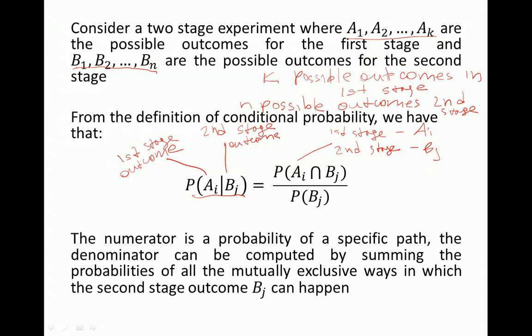The numerator is the probability of a specific path Ai then Bj, and the denominator is just the probability of Bj, which can be computed by summing the probabilities of all the mutually exclusive ways in which the second stage outcome Bj can happen.